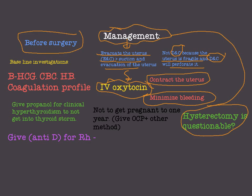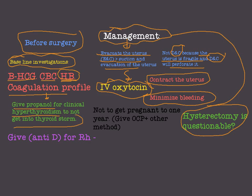Hysterectomy may be considered for women near menopause or those who will not conceive afterward. Before surgery, we must take baseline investigations: beta HCG, CBC, hemoglobin, cross-match, and coagulation profile, because there will often be significant bleeding during evacuation. In complete molar pregnancy we must also give prophylactic propranolol for clinical hyperthyroidism to prevent thyroid storm from anesthesia or the procedure itself. We also give anti-D to Rhesus-negative patients.